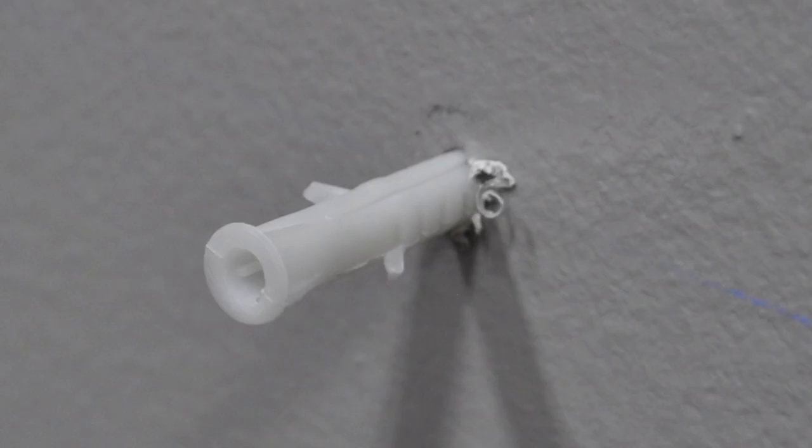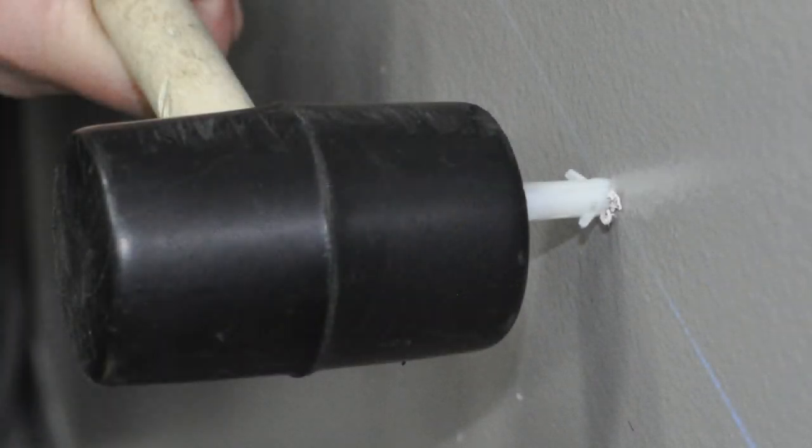Place the plastic inserts into the holes that have been pre-drilled. Use a soft mallet or hammer to tap the plastic inserts into the hole.